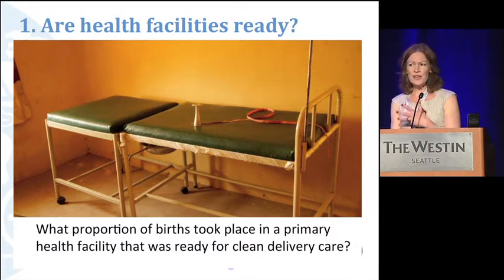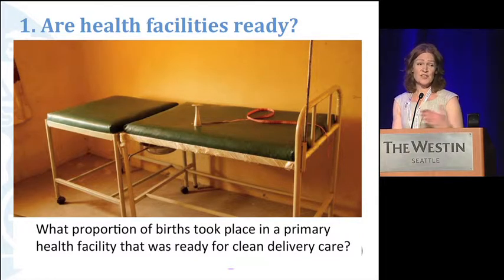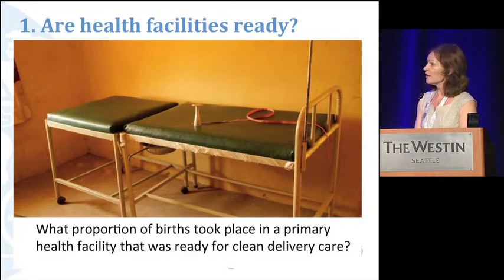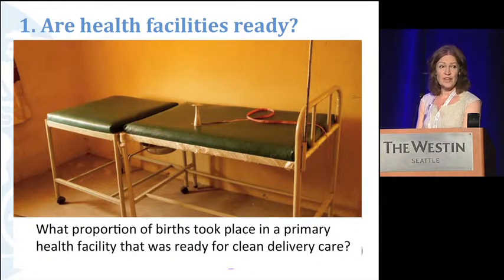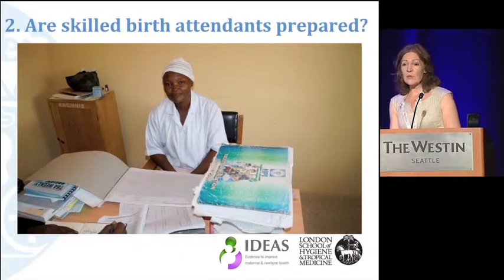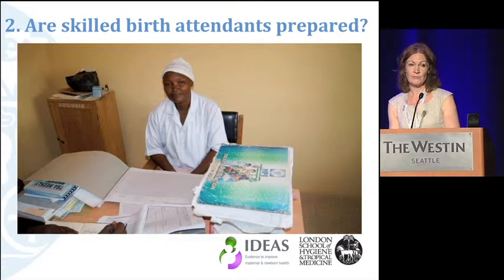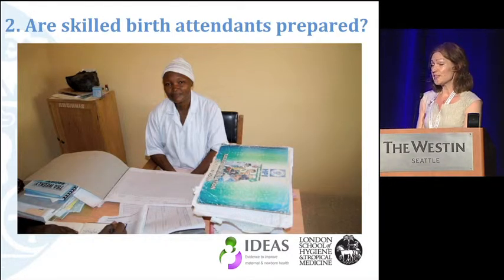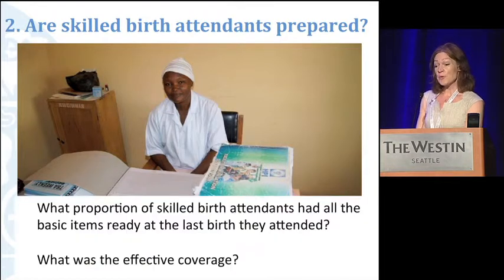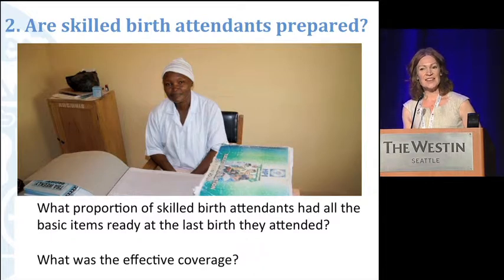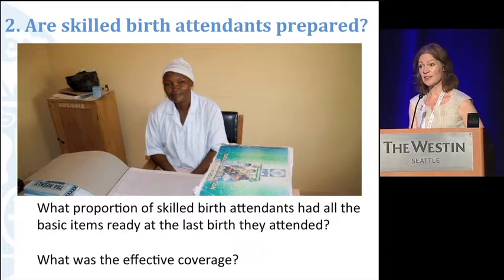I'm thinking about three really basic elements of care. Are the health facilities ready to deliver care at the places where skilled birth attendants are working? Can we adjust for the number of births taking place in those ready health facilities? And about the skilled birth attendants themselves: are they prepared? Can we go towards estimating an effective coverage measure of skilled birth attendants with prepared birth attendants?